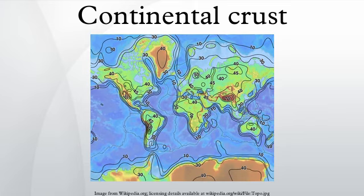Continental crust is considerably thicker than oceanic crust, mostly 25 to 70 kilometers versus the average thickness of the oceanic crust of around 7 to 10 kilometers. About 40 percent of Earth's surface is now overlaid by continental crust. Continental crust makes up about 70 percent of the volume of Earth's crust.